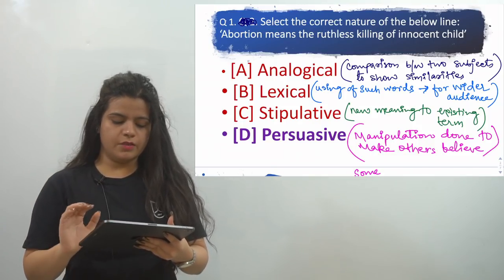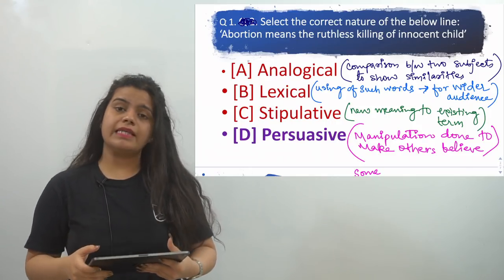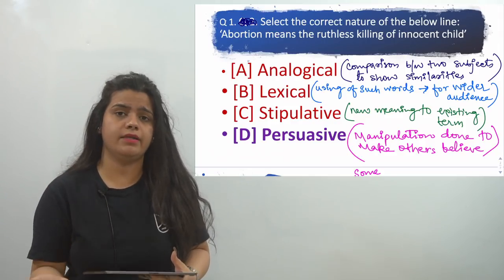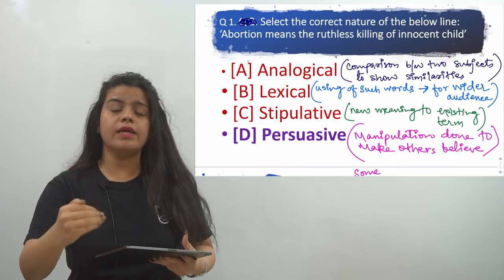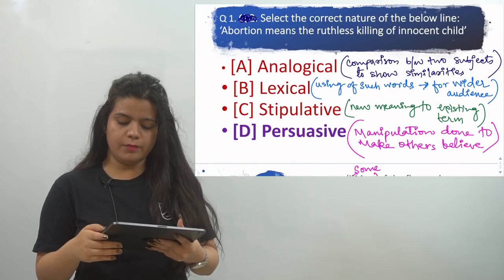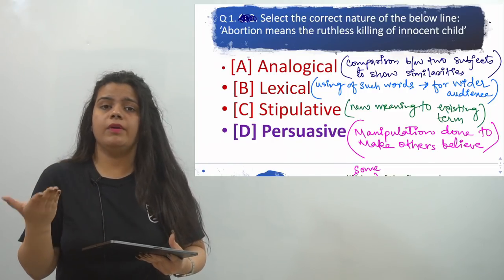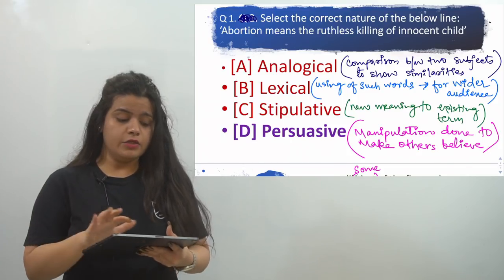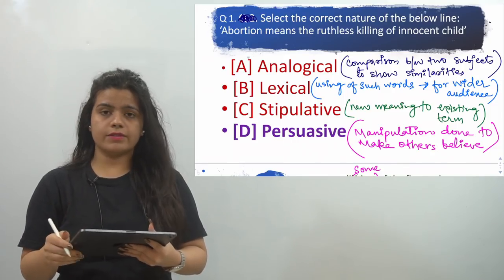The third option is stipulative, which means giving a new meaning to existing terms. Stipulative means to take a term that already exists and give it a new meaning. The fourth option is persuasive, which means manipulation done to make others believe your ideas and beliefs. Now, looking at the statement — 'Abortion means the ruthless killing of innocent child' — we see that abortion has been given a meaning: ruthless killing of innocent child.